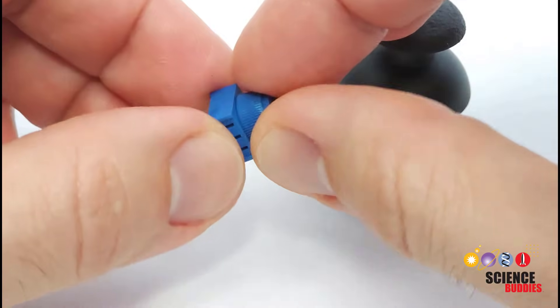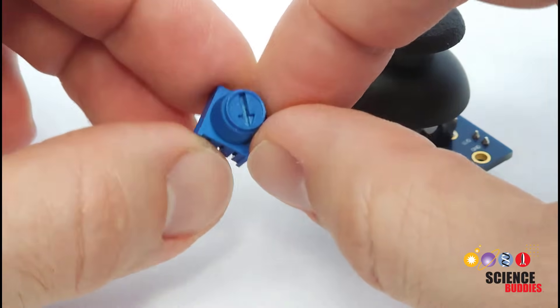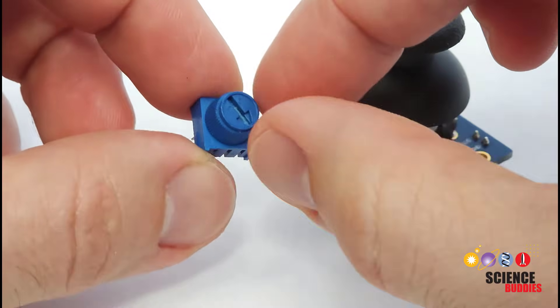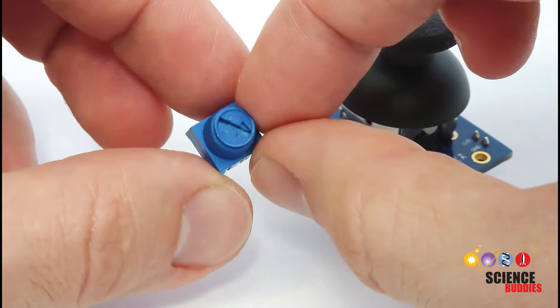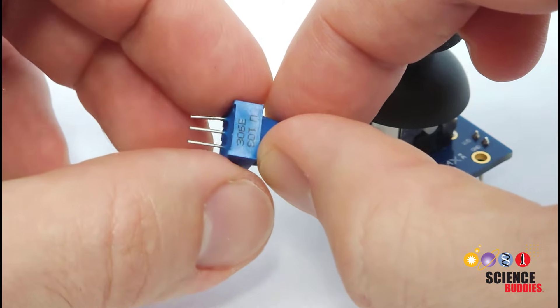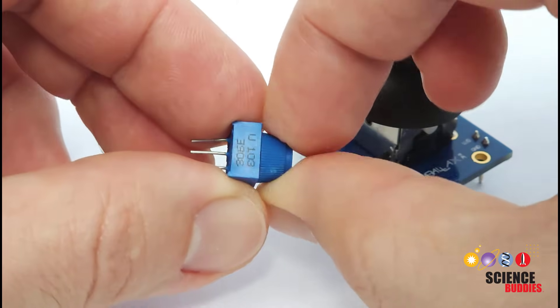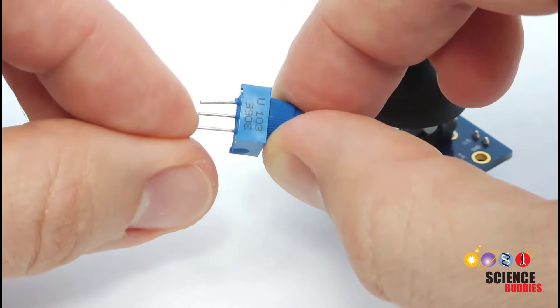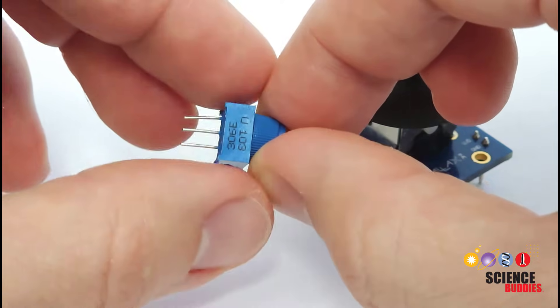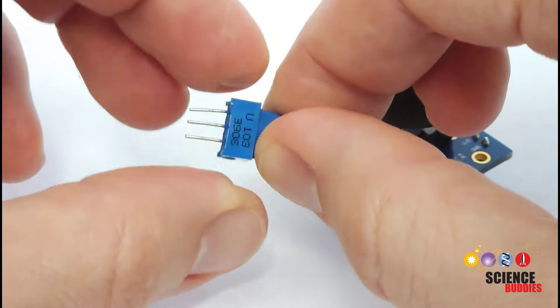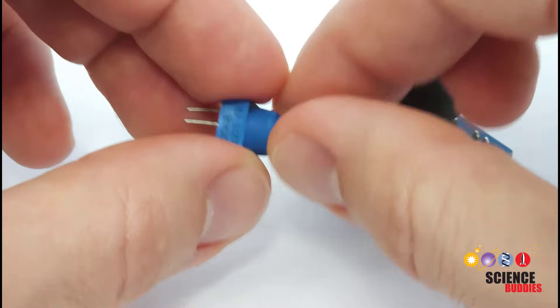So if you have watched our previous videos in our How to Use an Arduino series, which you can find linked in the description of this video, you know that a potentiometer is just a variable resistor with three pins. And when you connect this to the Arduino and turn the knob, the voltage on this middle pin will change and you can use that to get a continuous signal using the analog inputs and the analog read function on your Arduino.